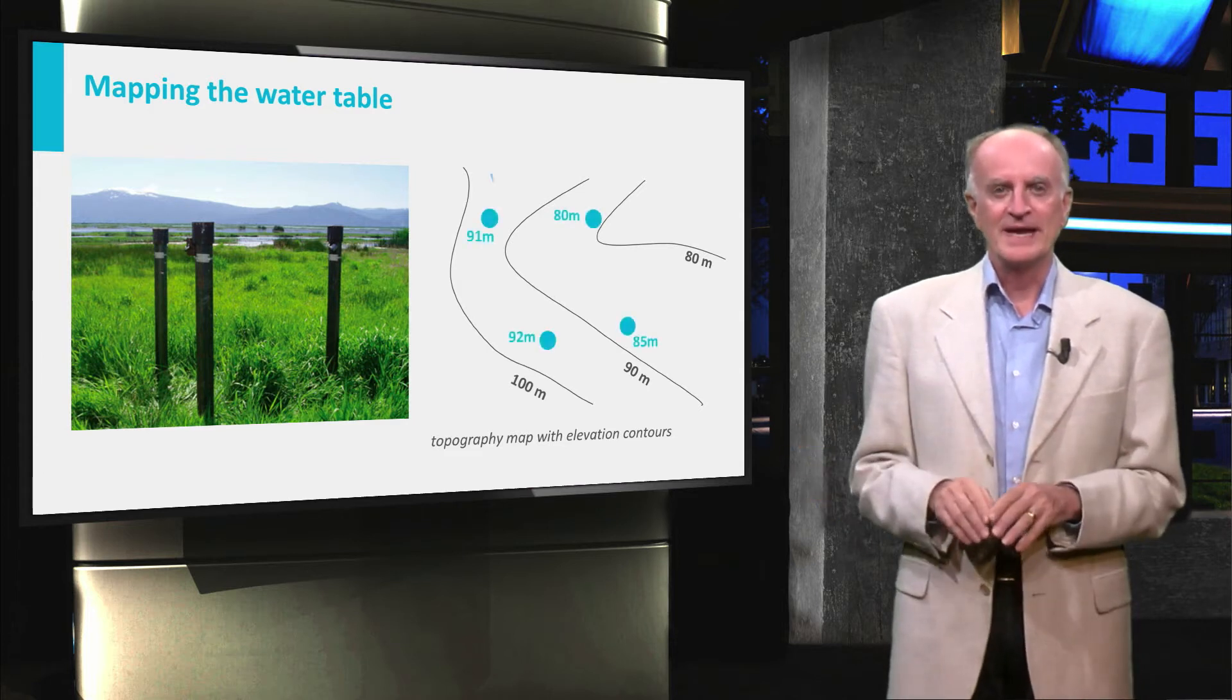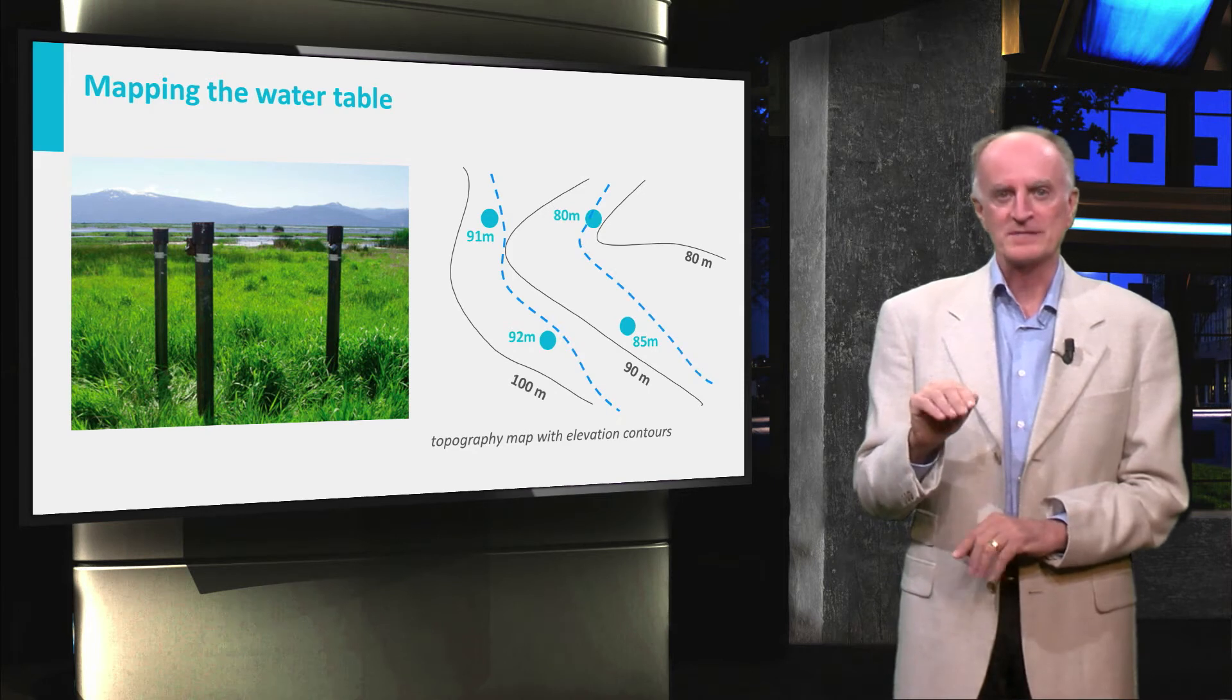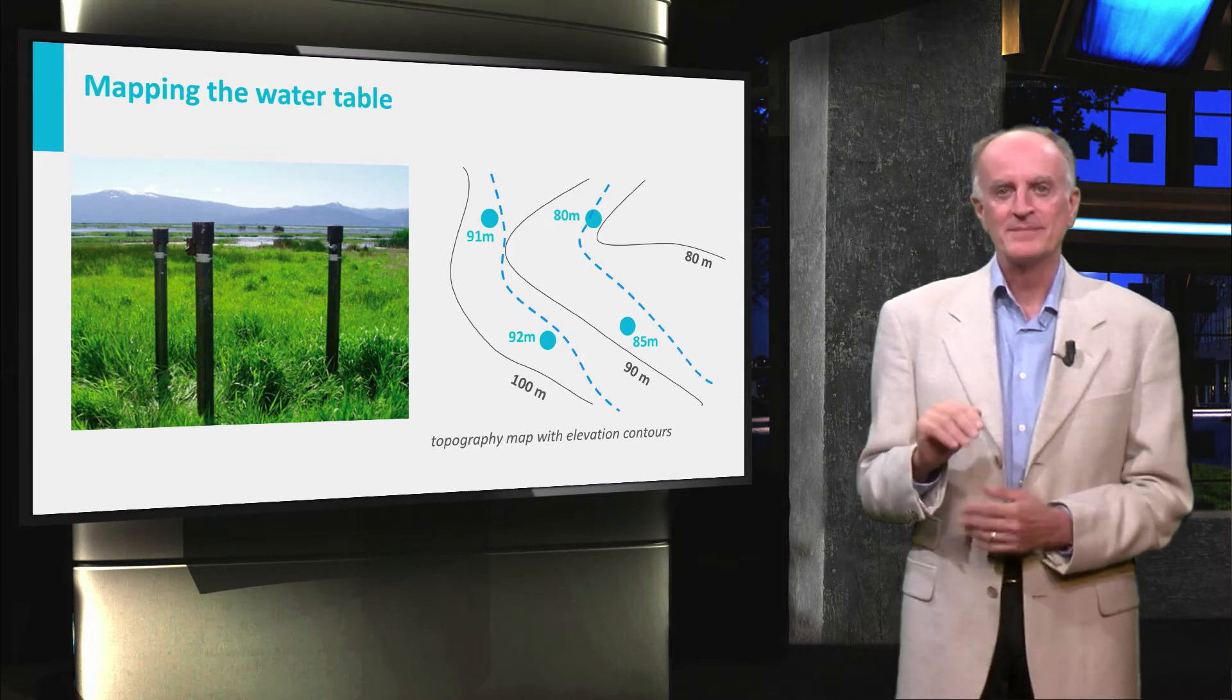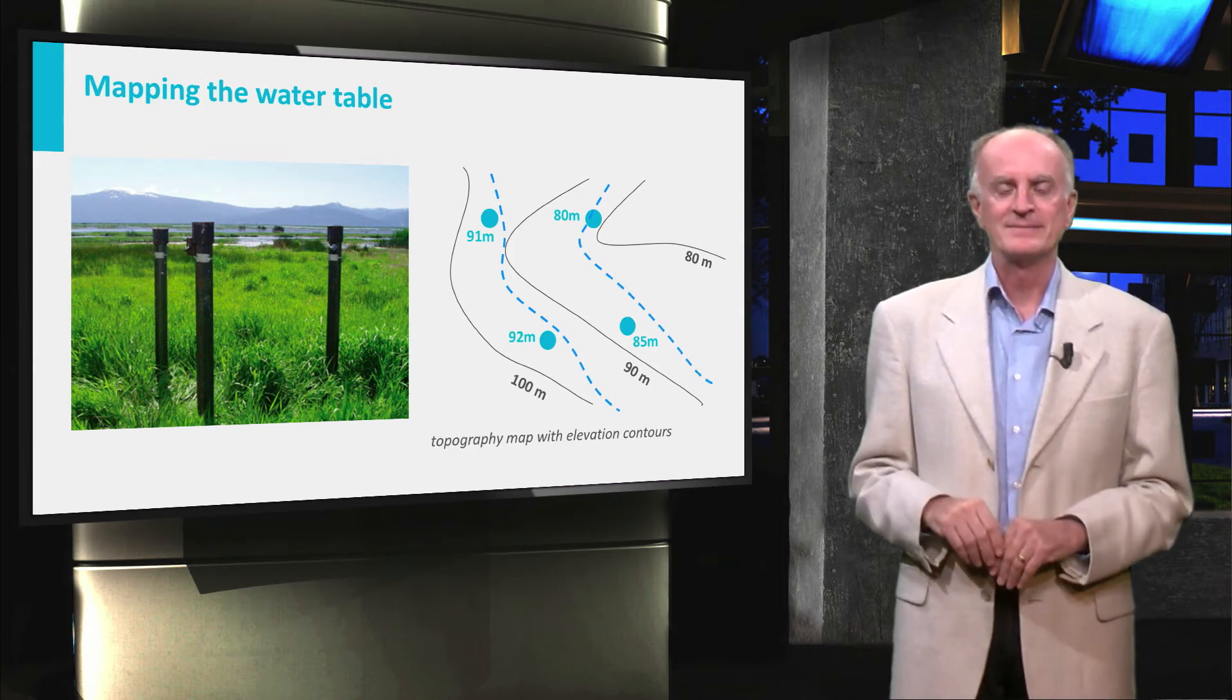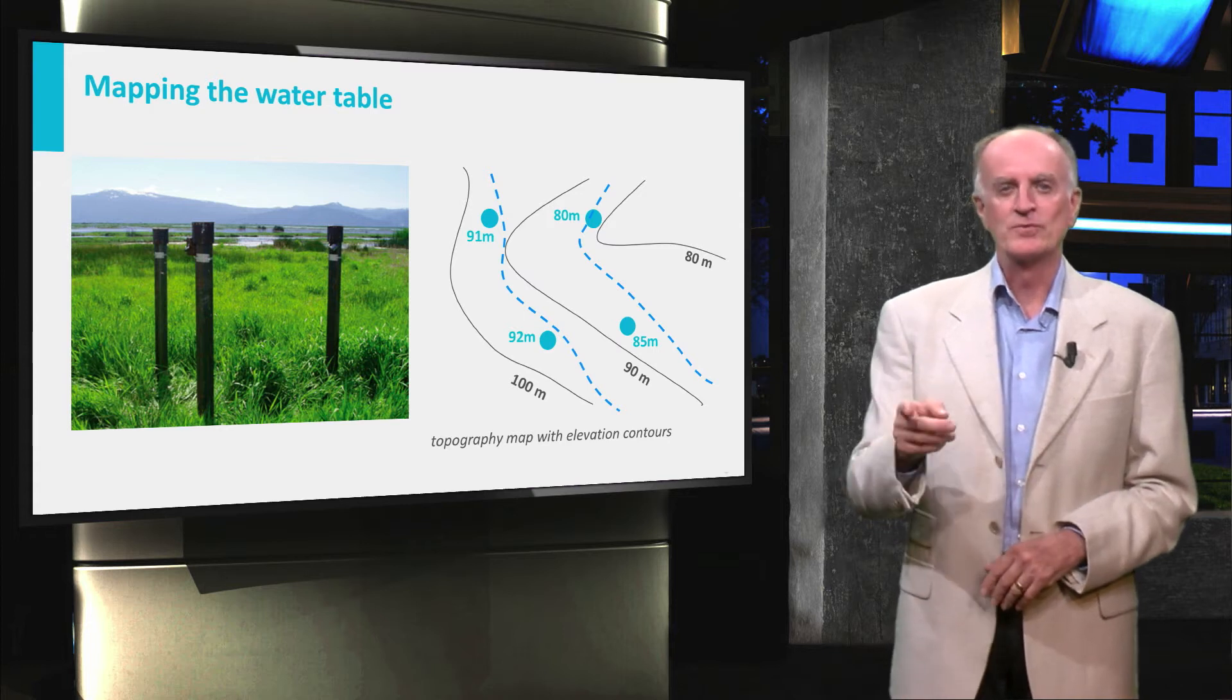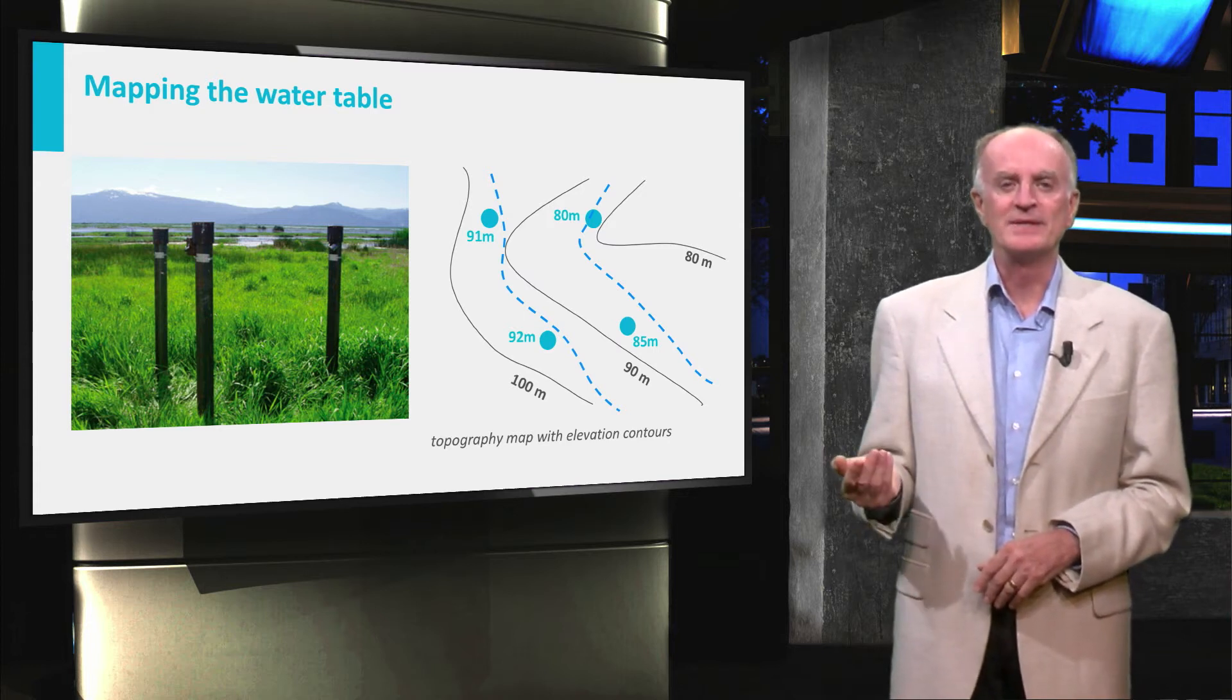From these wells, the height of the water level with respect to a reference level is measured and plotted on the map. Eventually, contours are drawn to interpolate between the data points.